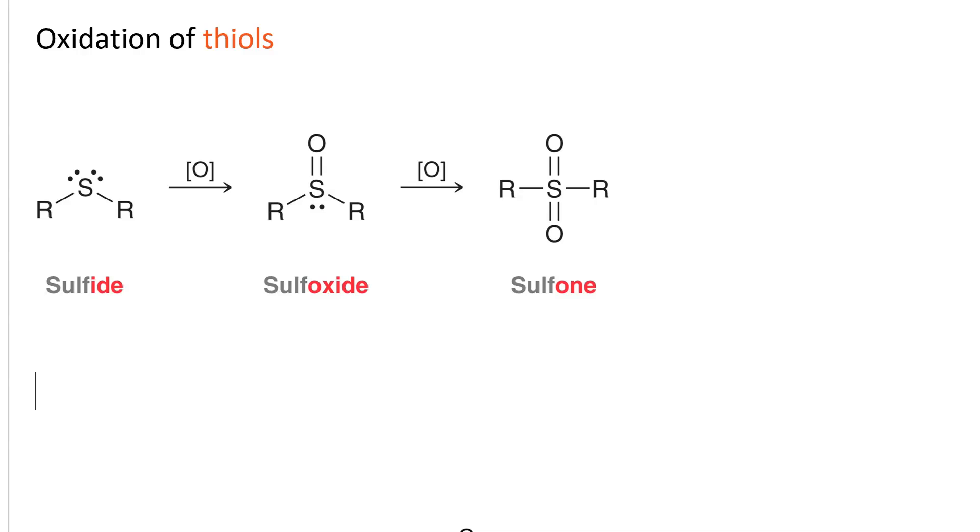Thiols can be oxidized. One equivalent of oxidation gets us to a sulfoxide. Right? Remember DMSO? That's a methyl group attached to a sulfoxide attached to another methyl group. Dimethyl sulfoxide.